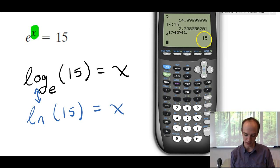So, this is how you solve, in general, a problem like this. You think about the E as the base of a log, and then you write it as a natural log.